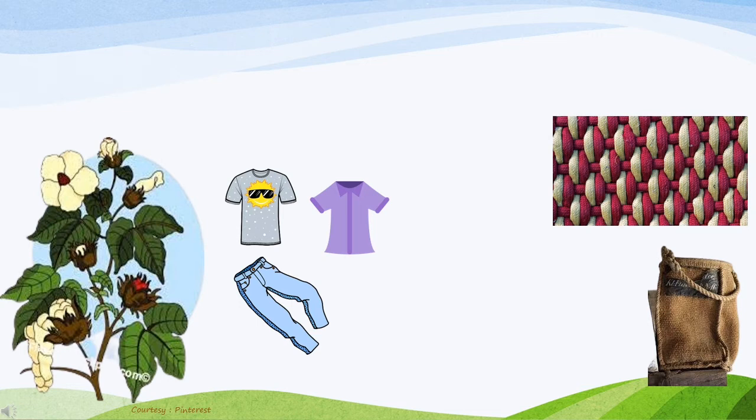Even the clothes we wear, and bags and carpets we use, also come from plants. We get cotton thread from the cotton plant and we get fiber from the jute plant, and with these we make different types of clothes, bags, fibers, threads and carpets. So all these things come from plants.